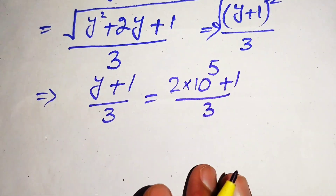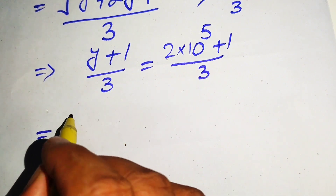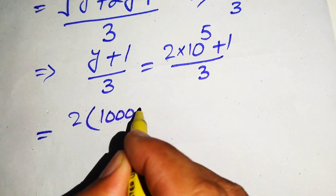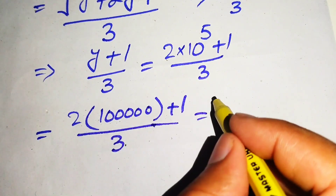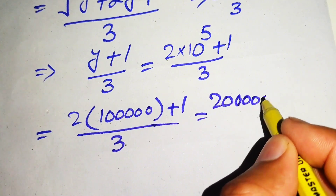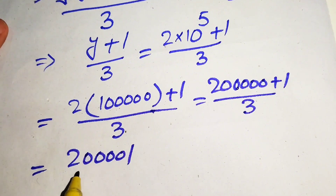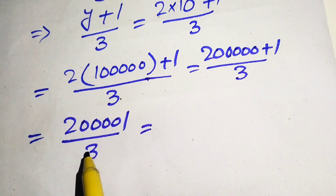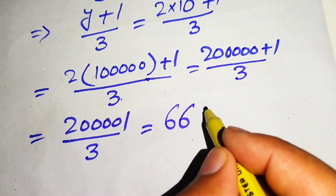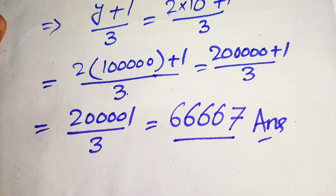Here we need a calculator to simplify. We know that 10 raised to power 5 is 1 followed by 5 zeros, plus 1, divided by 3. This becomes 2 times of 500000 plus 1, divided by 3, which is 2000001 divided by 3. When we divide this by 3, we finally get 666667. So this is our final answer to this question. Thank you so much for watching this video — please subscribe to my channel for more exciting videos.